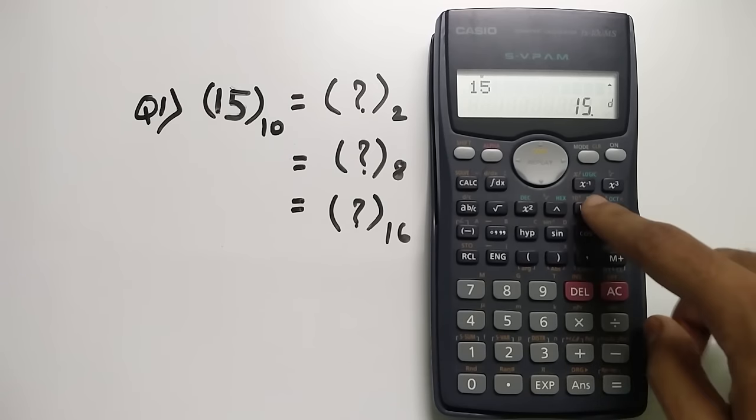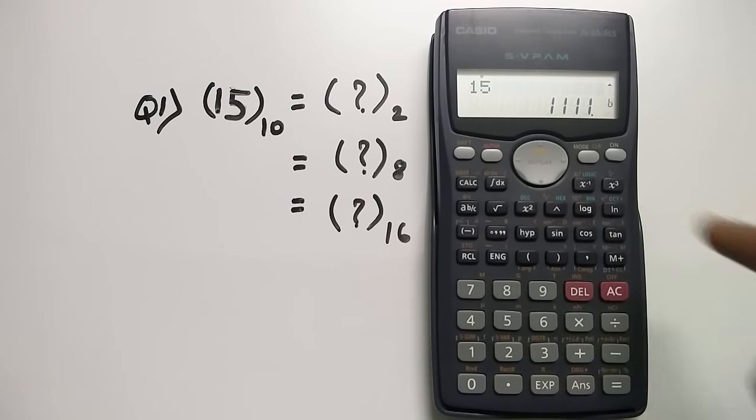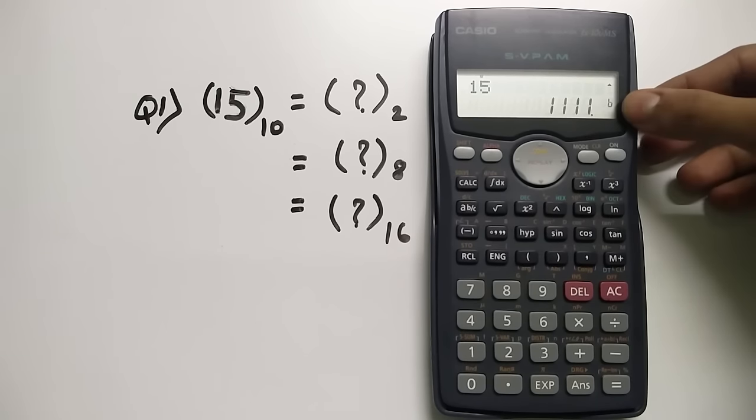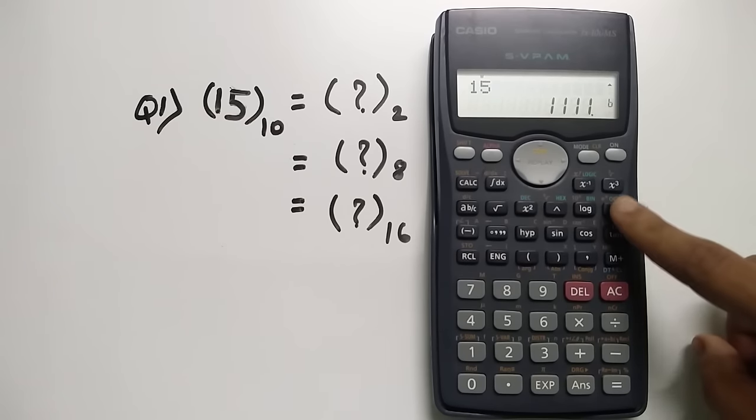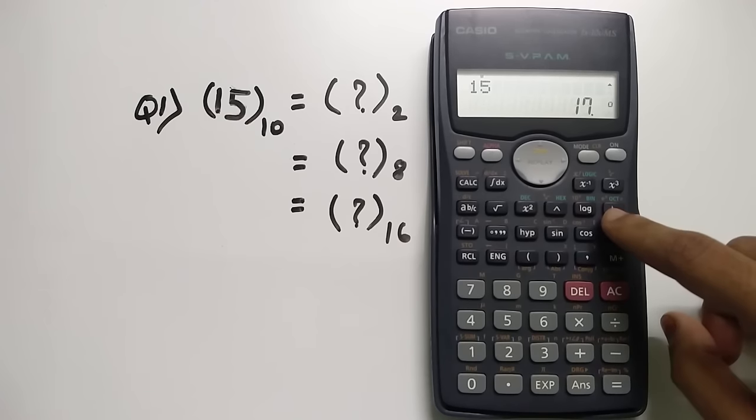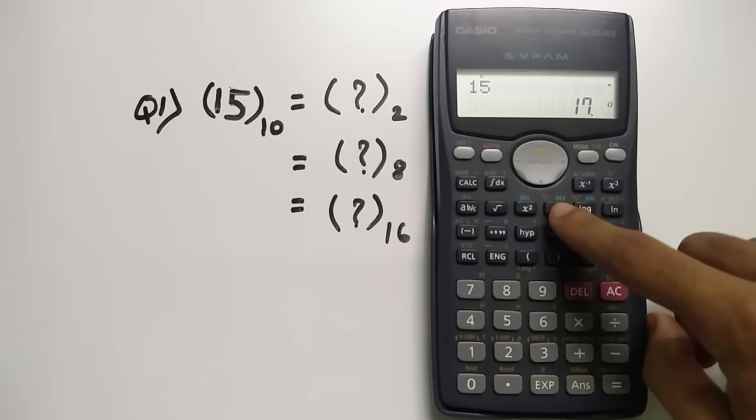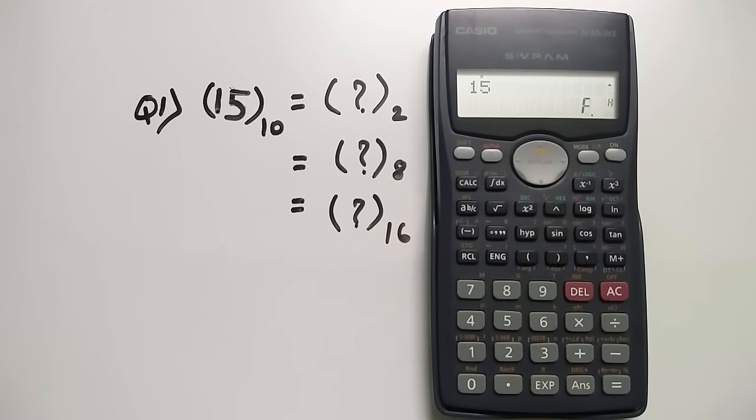For the first one we have to convert it to binary. I'll just click this button and as you can see the small character changed to b and we have the binary value of 15 that is 1111. Similarly if I click the octal button it will show me the octal value of 17. And if I click the hexadecimal number button it will show me the letter F since in hexadecimal there are 16 different values, we have 0 to 9 and A to F, and 15 in decimal represents F in hexadecimal.